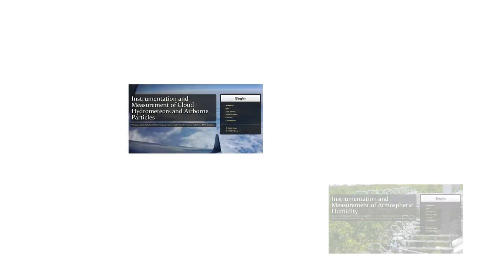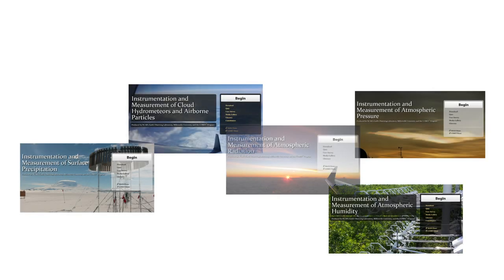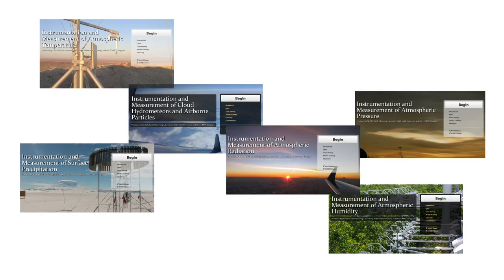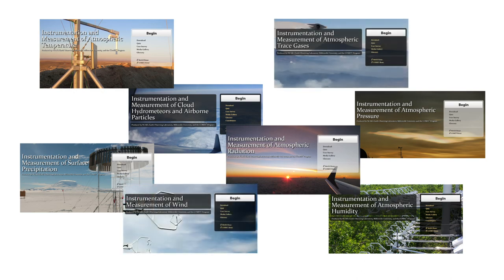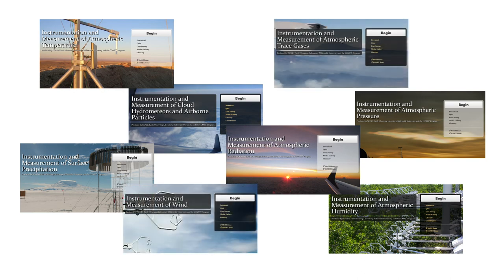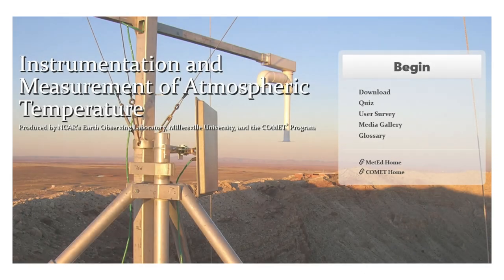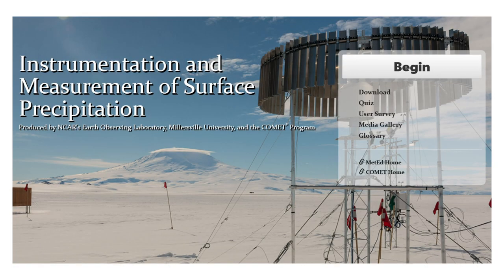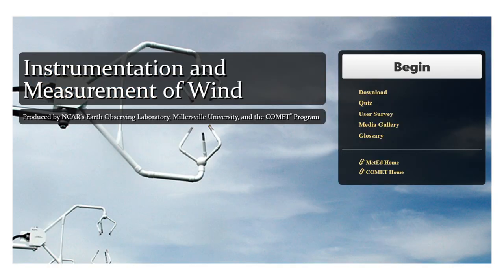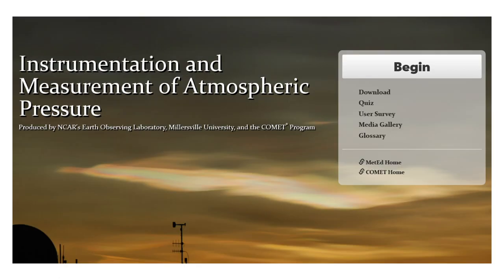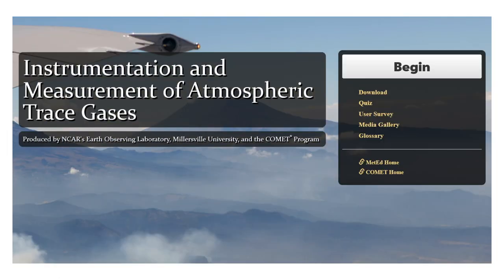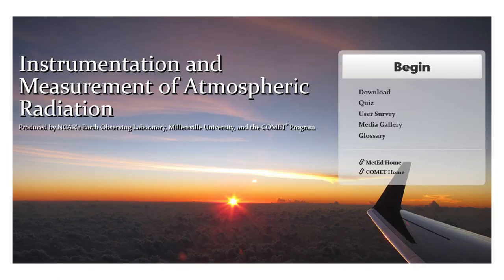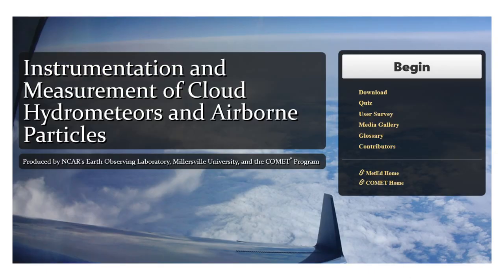The remaining eight lessons focus on the instruments used to measure different properties within the atmosphere. The variables observed include temperature, humidity, precipitation, wind, pressure, trace gases, radiation, and clouds and aerosols.